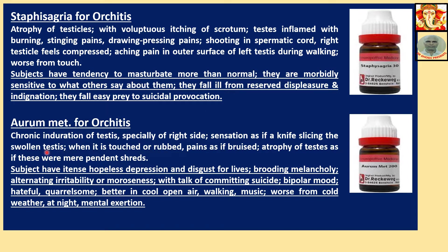Aurum (Oramed) for Orchitis: Chronic inflammation of testis, especially on the right side. Sensation as if a knife is slicing the swollen testis when touched or rubbed. Pains as if bruised. Atrophy of testis as if there were mere pendant shreds. Subject of intense hopeless depression and disgust for life, brooding melancholy, alternating irritability or moroseness with talk of committing suicide, bipolar mood, hateful, quarrelsome. Better in cool open air, walking, music. Worse from cold weather, at night, and mental exhaustion.